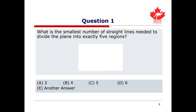Question 1 asks: What is the smallest number of straight lines needed to divide the plane into exactly 5 regions? Please pause the video to first try this problem on your own before proceeding to watch the answer.